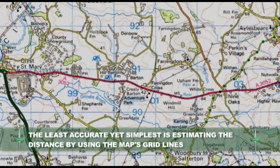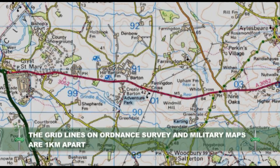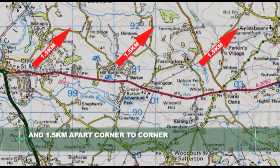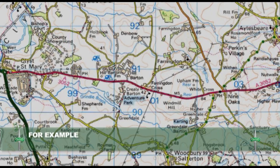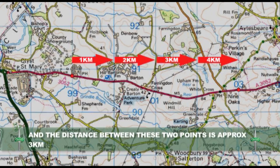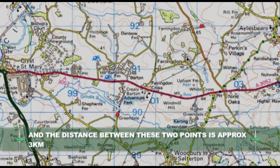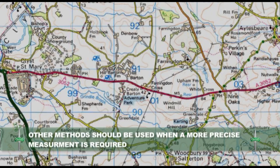The least accurate, yet simplest method is estimating the distance by using the map's gridlines. The gridlines on all Ordnance Survey and most military maps are 1km apart and 1.5km corner to corner, and as such a quick estimate can be obtained by using these gridlines. For example, the distance between points A and B is approximately 4km, and the distance between points C and D is approximately 3km. However, this method should only be used as a quick estimation of distance, and other methods should be used when a more precise measurement is required.